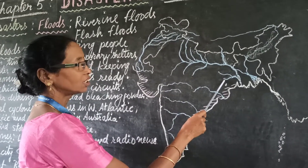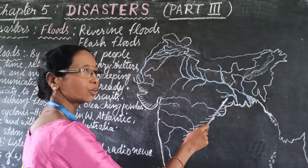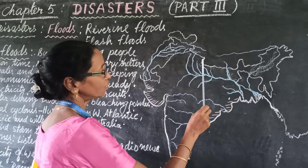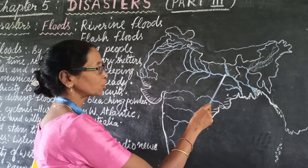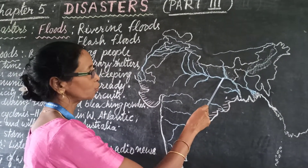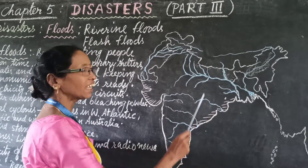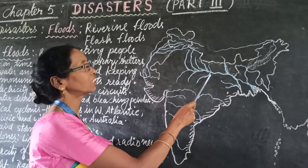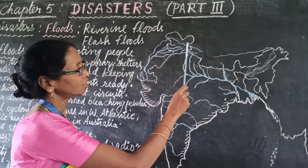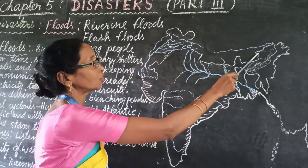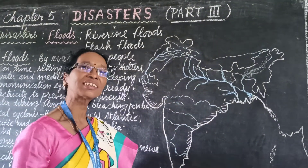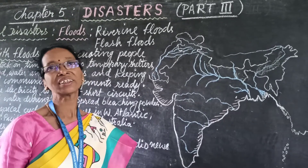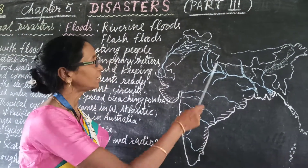In Jharkhand, river Damodar is also known as the sorrow of West Bengal. River Koshi is known as the sorrow of Bihar. When there is very heavy rainfall, some rivers get flooded. And when there is melting of glaciers on the Himalayas, sometimes all of a sudden the volume of river water increases and there is flood.